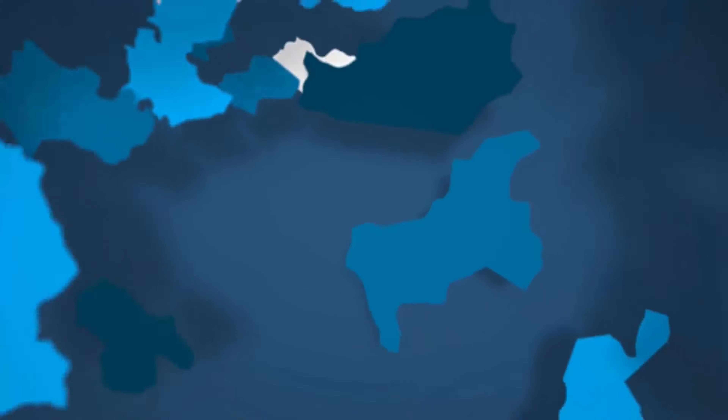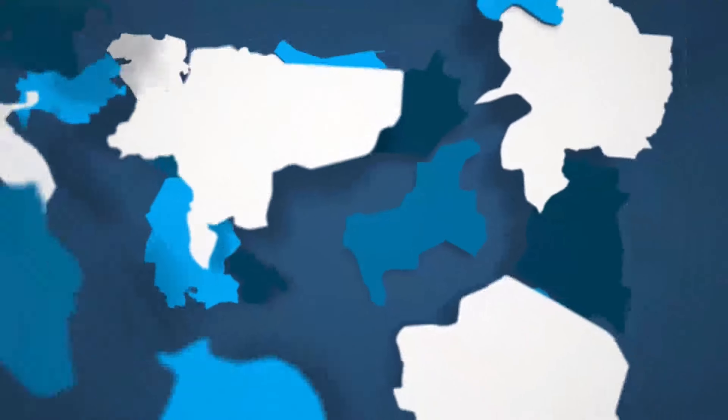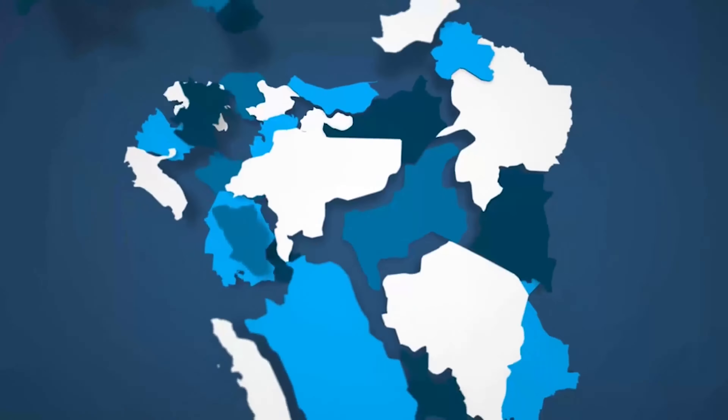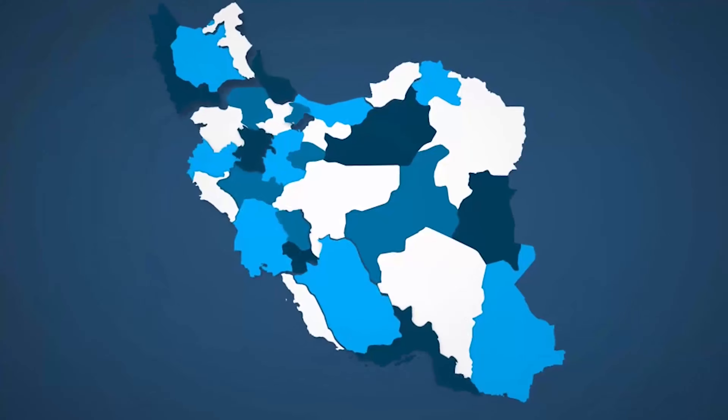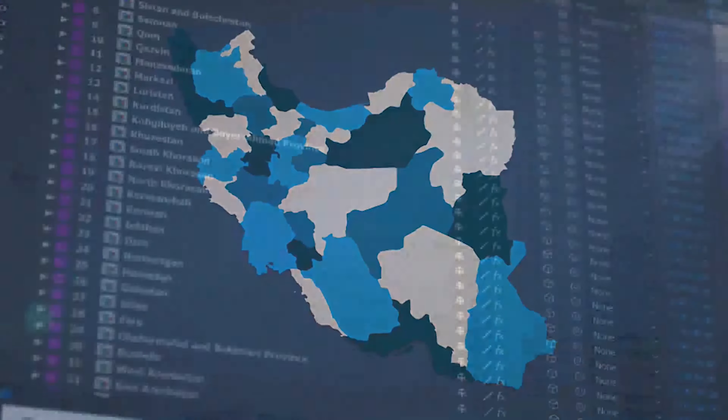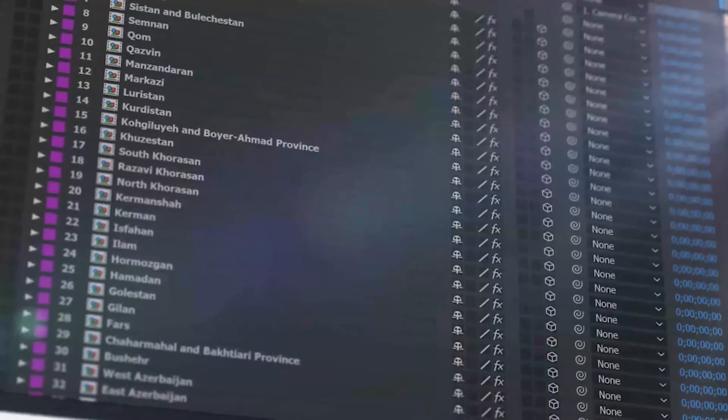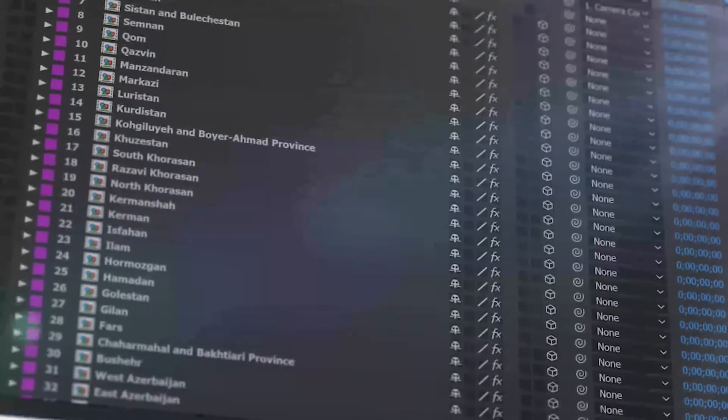Introducing our latest country map kit, a handy new After Effects template from Space Stock Footage. All the major regions that make up the specific country isolate it on separate 3D layers, so you can scale, position, color, and add effects as required.